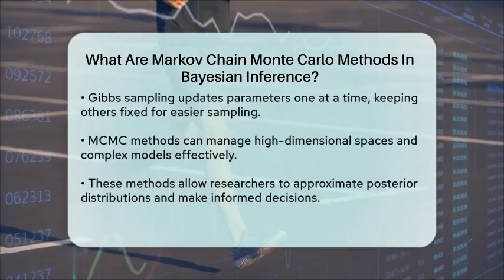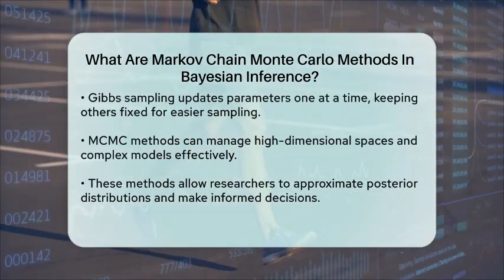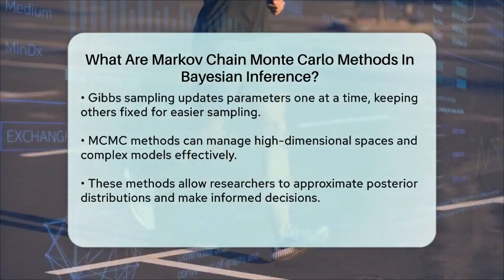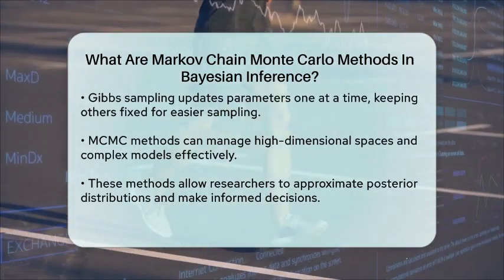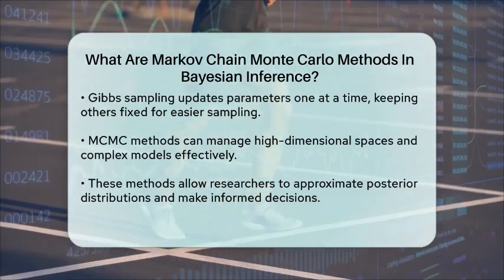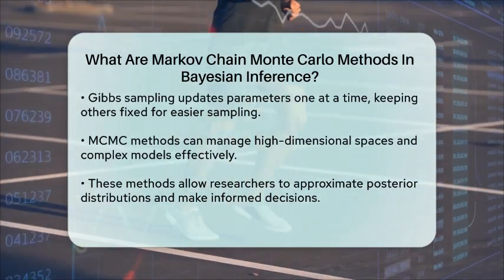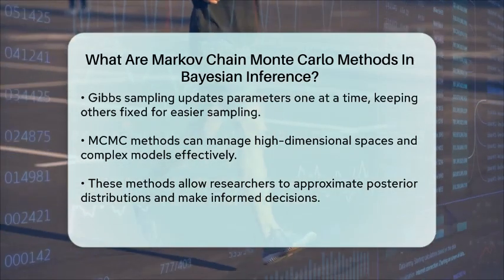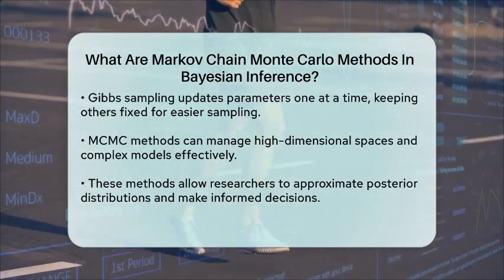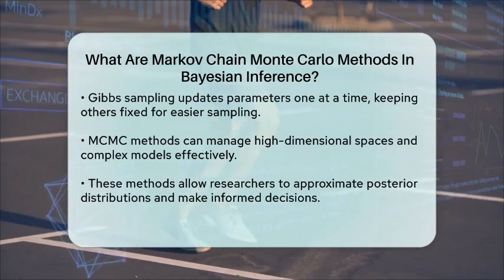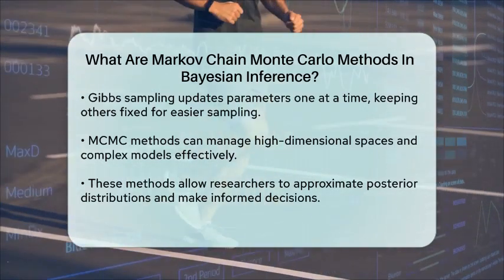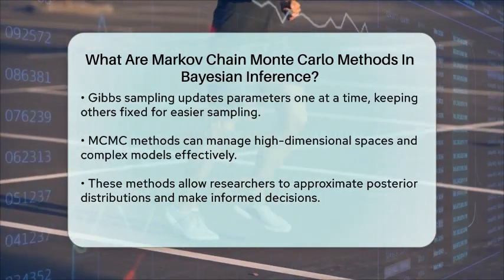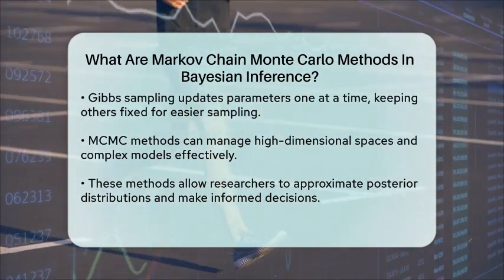MCMC methods are powerful tools in Bayesian inference because they can handle high-dimensional spaces and complex models that would be challenging to analyze using traditional methods. They provide a way to approximate the posterior distribution, allowing researchers to make informed decisions based on their data. In summary, Markov chain Monte Carlo methods serve as a bridge between complex statistical models and practical inference in Bayesian statistics. By utilizing these algorithms, researchers can effectively navigate the uncertainties inherent in their data and gain a clearer understanding of the underlying processes.